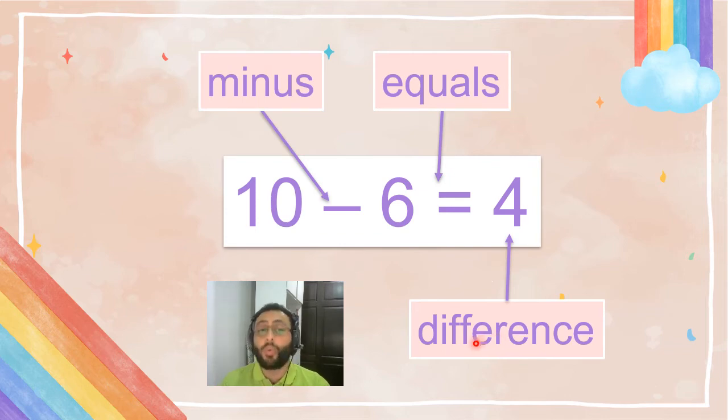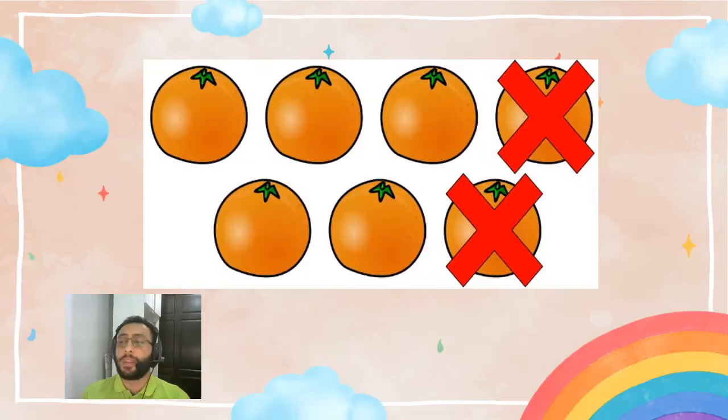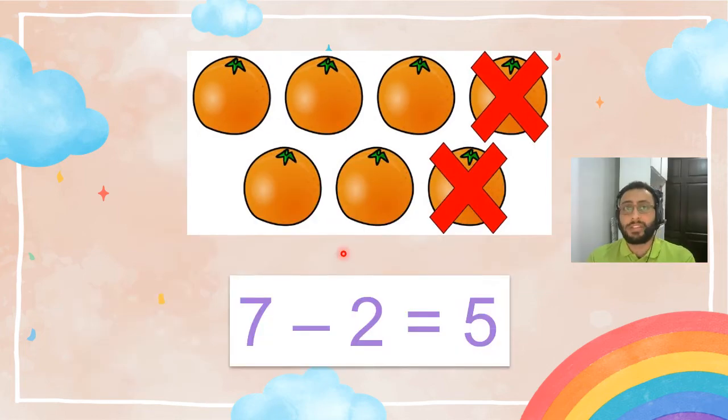This is what we call the difference. In addition it's called the sum, but in subtraction we call it the difference. Now look at this picture. Imagine you have—how many oranges? One, two, three, four, five, six, seven oranges. But you get hungry, so you eat two of them. So how many oranges do you have now? One, two, three, four, five left. This is simple subtraction. Seven—see, we have seven oranges—minus two, because we ate two. Two are gone. So how many do we have now? What is the difference? It is five.